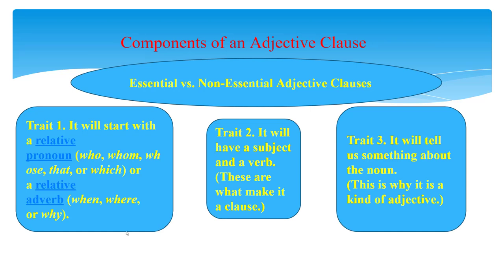An adjective clause, also called a relative clause, will have the following three traits. Trait one: it will start with a relative pronoun — who, whom, whose, that, or which — or a relative adverb — when, where, or why — which links it to the noun it is modifying. Quite often the relative pronoun can be omitted; however, with an adjective clause it is always possible to put one in. Trait two: it will have a subject and a verb — these are what make it a clause. Trait three: it will tell us something about the noun — this is why it is a kind of adjective.